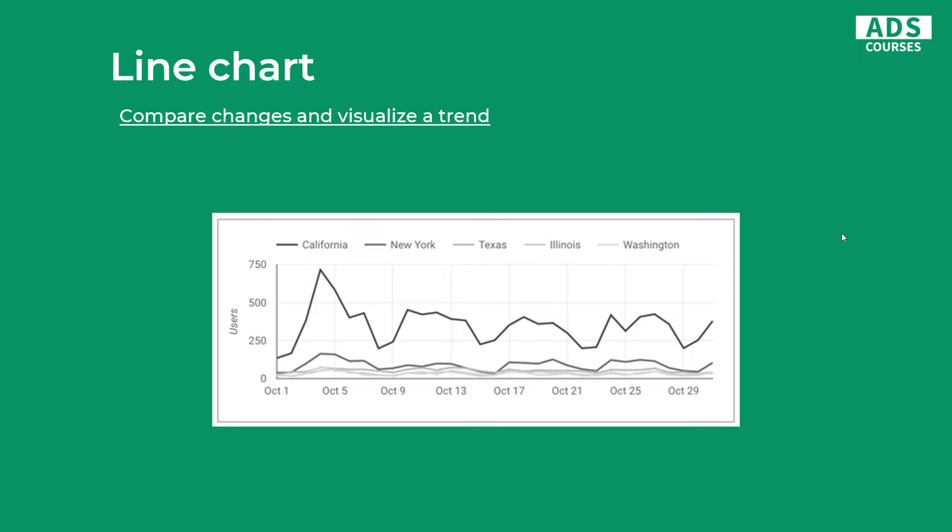Next one is the line chart and you simply use it to compare changes and visualize a trend. It's also one of the most common chart types available. Basically every time you want to visualize a trend you choose a line chart. But you should be careful when you have a lot of dimension values — like in this example, states like Washington and Illinois are not visible good in this chart. But when you want to actually show a trend, you should use a line chart.